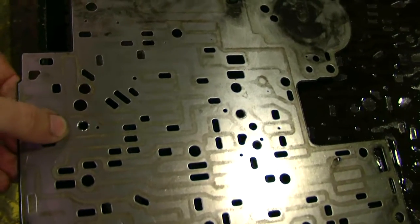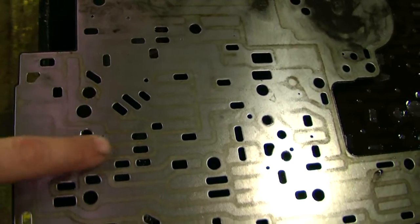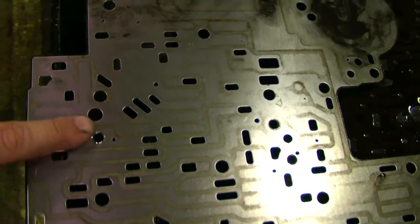You can see here we have a separator plate on a valve body. This is where one of the check balls has been riding. You can see it's shiny. It's severely worn.